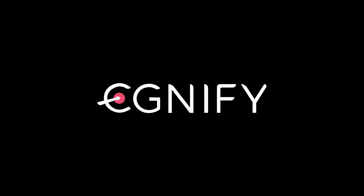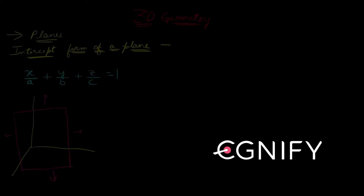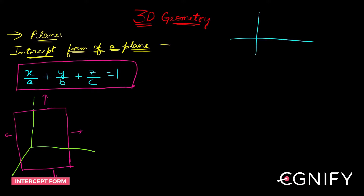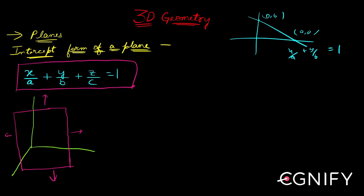Let us now look at the intercept form of a plane in its Cartesian form. If you remember the intercept form of a straight line, you had a line passing through (a, 0) and (0, b), and you wrote x/a + y/b = 1. Similarly, here we have the intercept form of a plane.